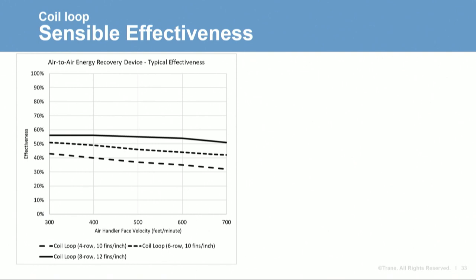The coil with more heat transfer surface area performs best, showing the highest effectiveness. As heat transfer surface area decreases, sensible effectiveness decreases. And as coil face velocity increases, effectiveness also decreases. A second chart shows air pressure drop on the vertical axis and face velocity on the horizontal axis. The 8-row 12 fins per inch coil has the highest air pressure drop at all velocities; as heat transfer surface area decreases, air pressure drop also decreases.